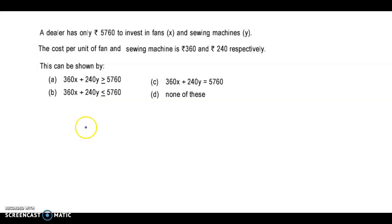This can be shown by - now here X is representing the number of fans and Y is the number of sewing machines.